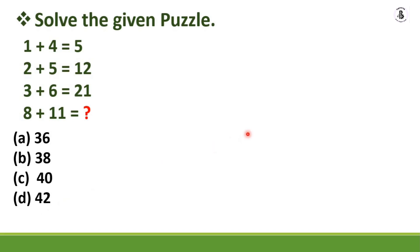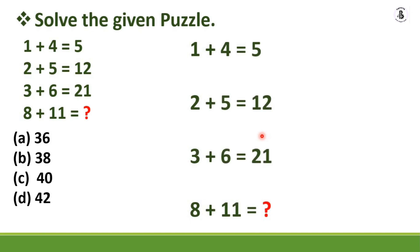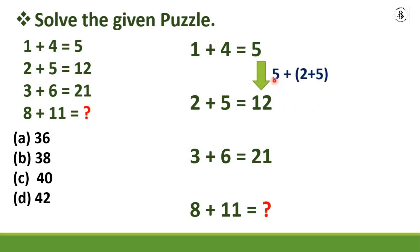This is a typical out-of-the-box problem. Notice: 1 + 4 = 5, which is correct. But 2 + 5 = 12 — how? The relation is that the previous row's answer carries forward. So 2 + 5 = 7, and adding the previous answer of 5 gives 12. Similarly, 3 + 6 = 9, plus the previous answer of 12 gives 21.